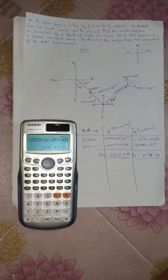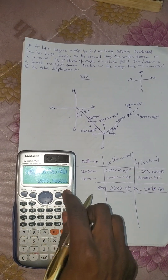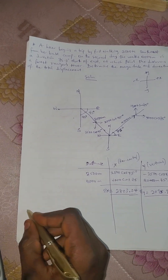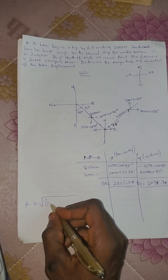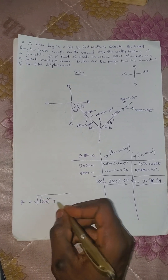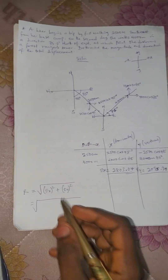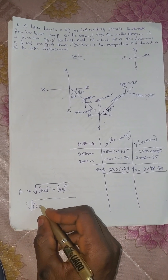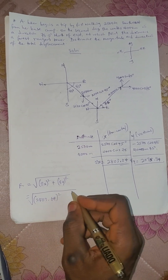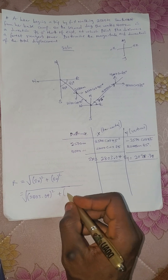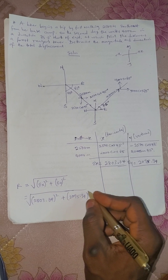Now if you check this very well, we have the resultant of this vector to be the square root of — don't forget the formula — summation x all squared plus summation y all squared. This becomes square root of: your summation x is 2803.04, all squared, then plus 2095.94, all squared.